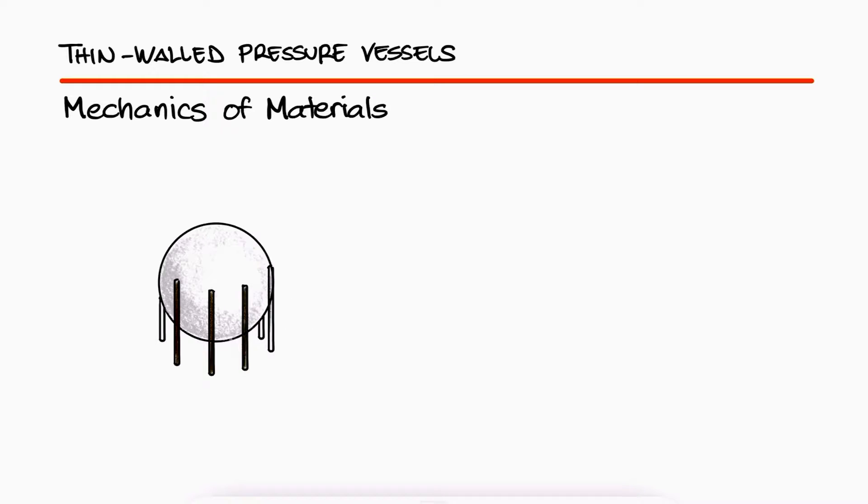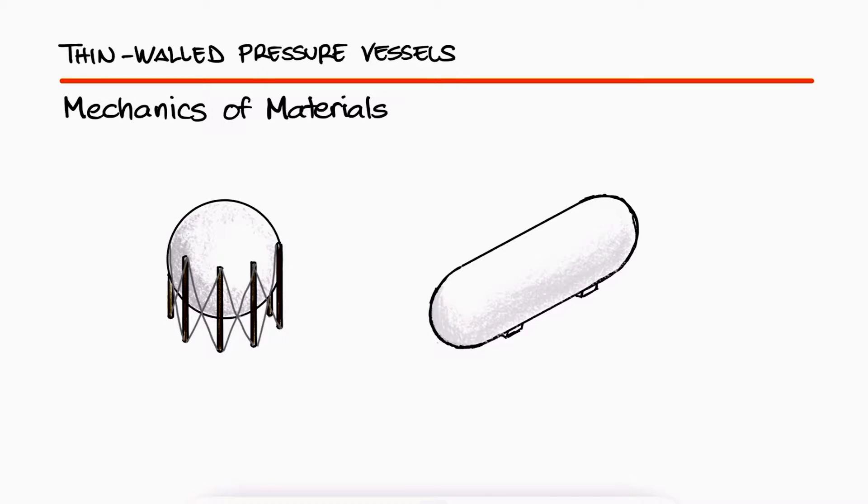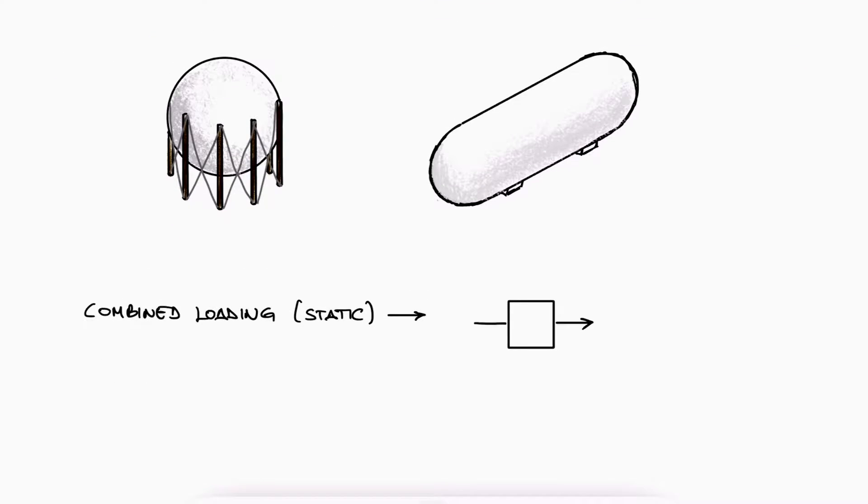Thin-walled pressure vessels are often used as examples for finding the principal stresses with the use of methods like Mohr's circle. Since many of the typical structures subjected to combined static loading only result in one normal stress, sigma, and one shearing stress, tau,